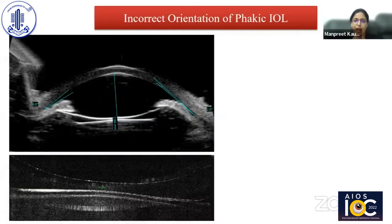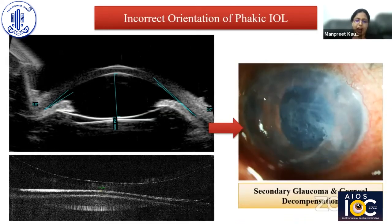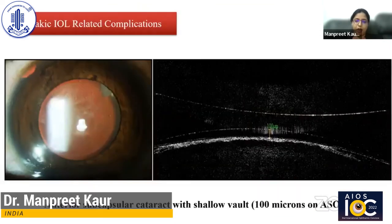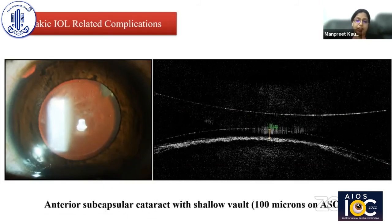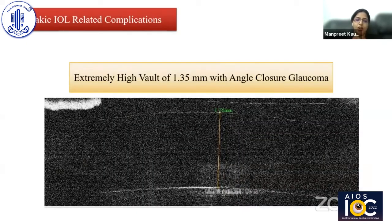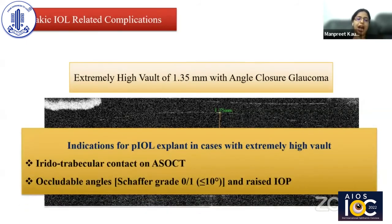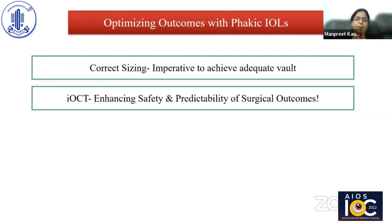For post-operative complications, OCT helps assess incorrect orientation of the phacic IOL. Complications such as cataract, secondary glaucoma, and corneal decompensation can be prevented if caught in time. Anterior subcapsular cataract with a very shallow vault can be observed, indicating explant and phacoemulsification. In another case, an extremely high vault of 1.35 mm was observed with angle closure glaucoma. When iridotrabecular contact or occludable angles with raised IOP are seen, a decision can be taken to exchange the phacic IOL with one size smaller.